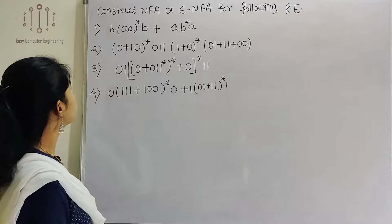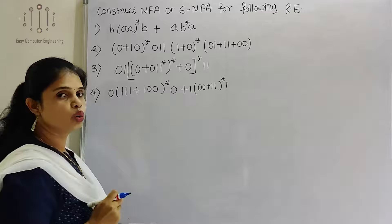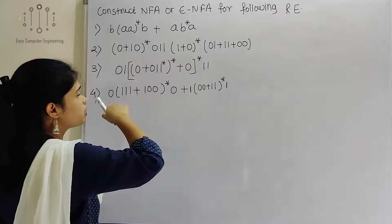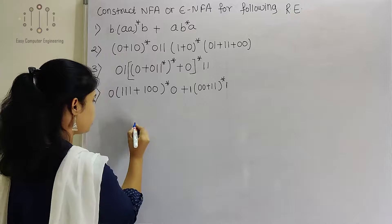The first regular expression is B·A*B + AB*A. There is an OR operator in between these two regular expressions. This is the first regular expression and this is the second regular expression. We are going to show the union or OR operator of these two.